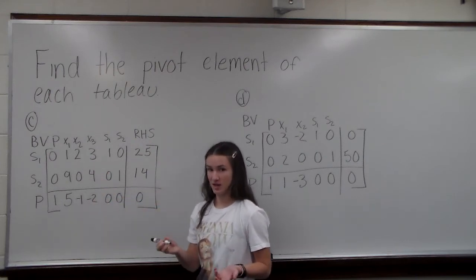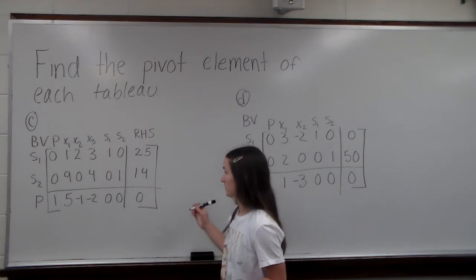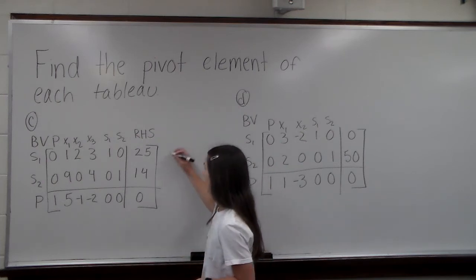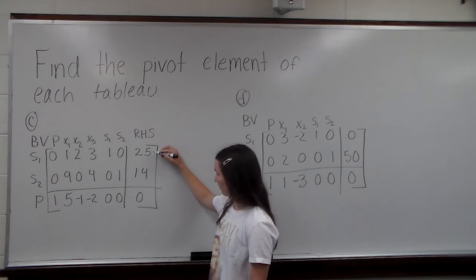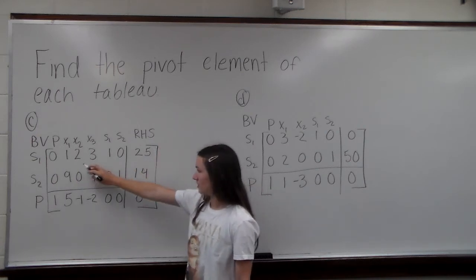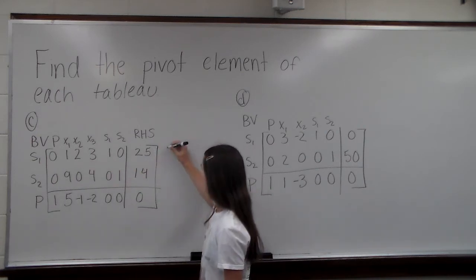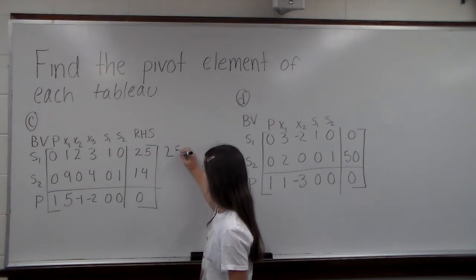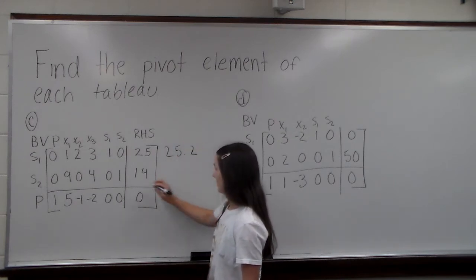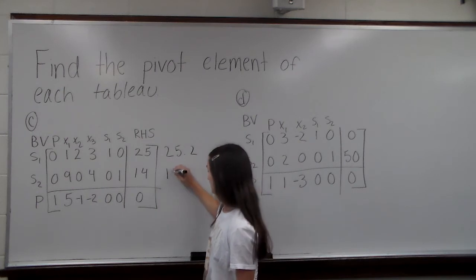The way that we can tell which one is our pivot element is we have to take a ratio of our right-hand side number here, 25, to the 2. So we compare these ratios, 25 to 2, and 14 to 0.